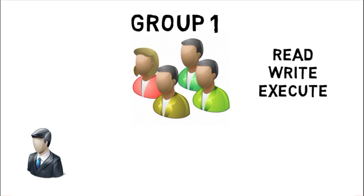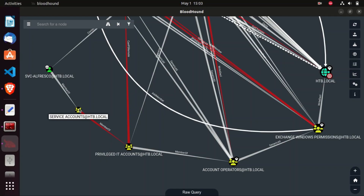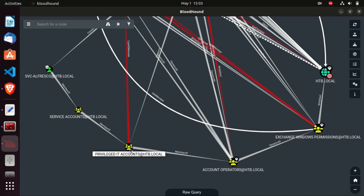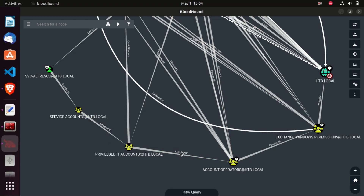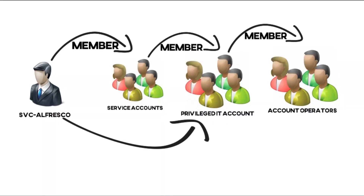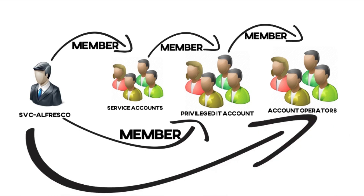Whenever there is a user that should have these permissions, you just associate the user to the group. This service account group is a member of the privileged IT account, and privileged IT account is a member of the account operators group. Basically, SVC Alfresco is now effectively a member of the privileged IT account and account operators group.